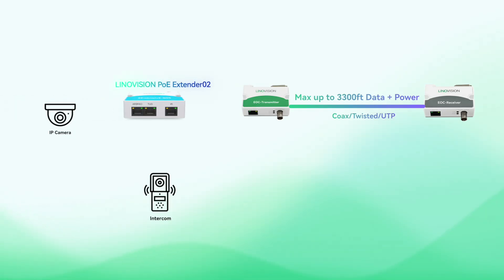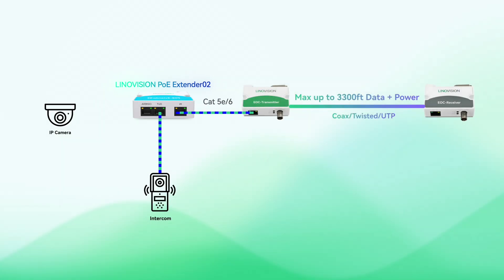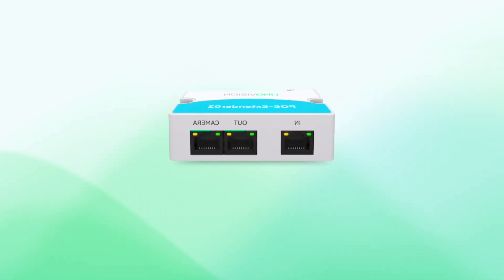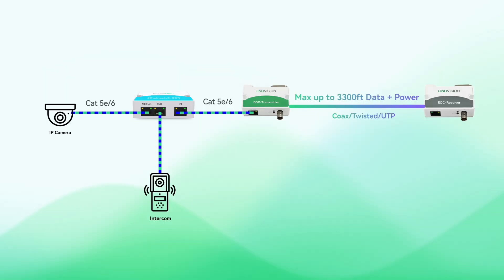Instead of connecting to the devices directly, now connect the Linnovision POE extender. This POE extender features two output ports, so a single coaxial cable now supports not just one device, but two IP network devices.